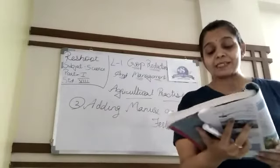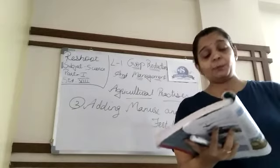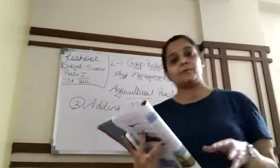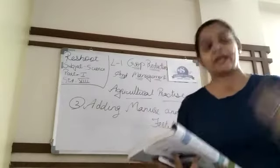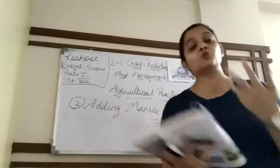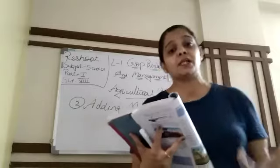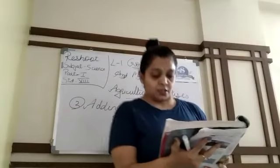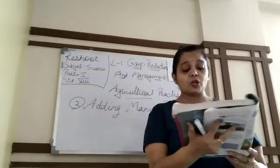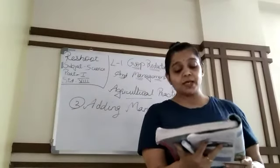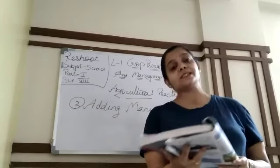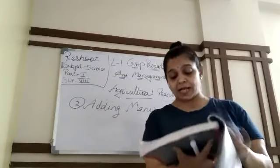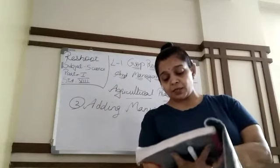Manure is an organic substance obtained from the decomposition of plants and animal waste. Farmers dump plant and animal waste into a pit or open place and allow it to decompose. Voh sab waste decompose ho jaayega, usse jo prepare hoga, that is called manure. Isliye usse organic bolte hain kyunki voh naturally prepare hota hai without any chemicals. The decomposition is caused by microorganisms. You have already learnt about vermicomposting in class six.